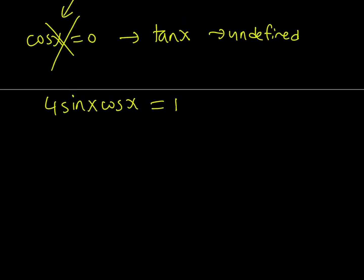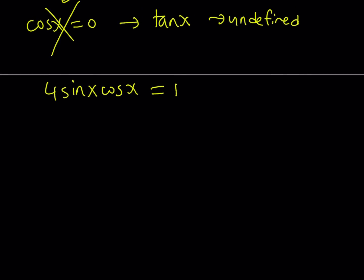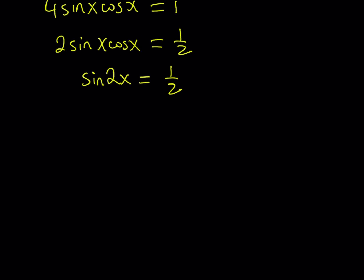Now this equation should be familiar to you because one of the formulas, or the only formula I should say for sine of 2x is 2 sine x cosine x. There are three formulas for cosine 2x, but usually a single one, the most common one for sine 2x is 2 sine x. So we can just go ahead and divide both sides by 2. That's the reasoning behind it. And that's going to give us 1 half on the right-hand side. And then on the left-hand side, we're getting sine of 2x, which is kind of nice because this equation is very easy to solve.